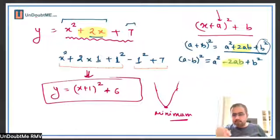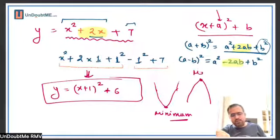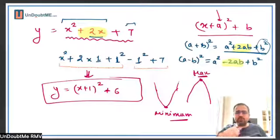Similarly, if it is a downward parabola, it will always have a maximum value and cannot have a minimum value — for the same reason. Is that clear? Yes sir.